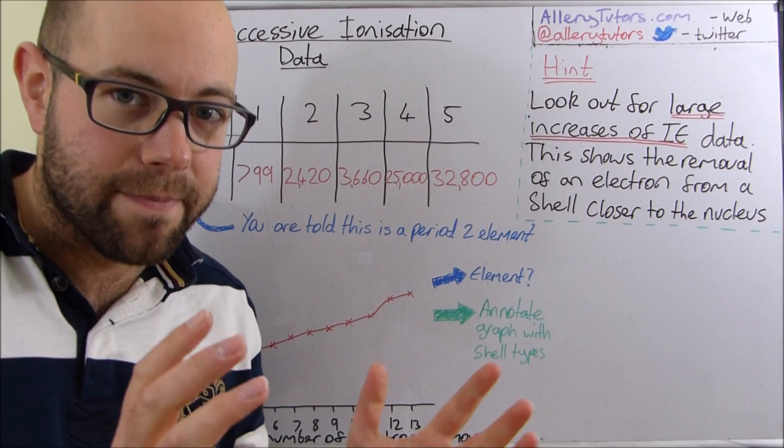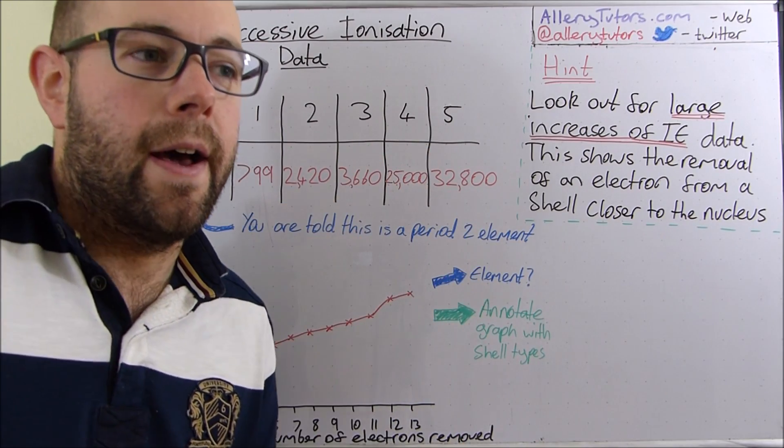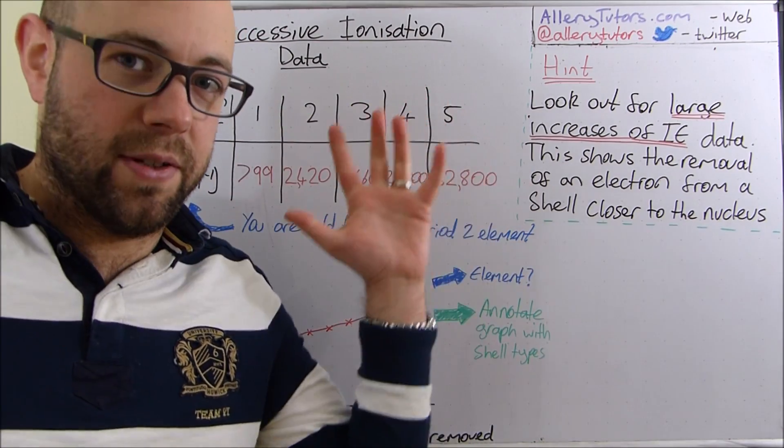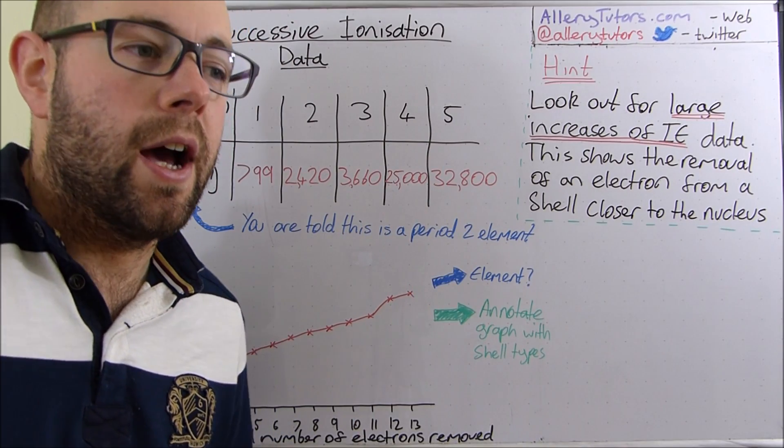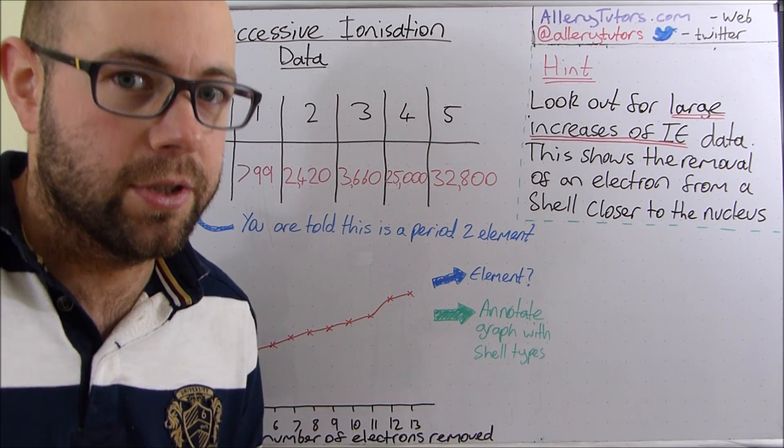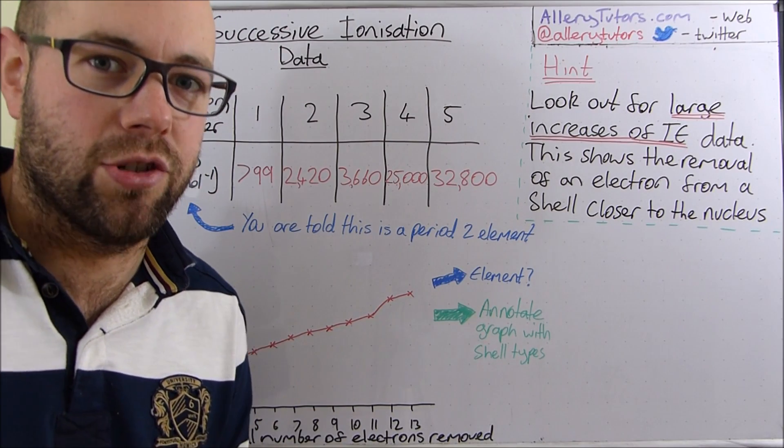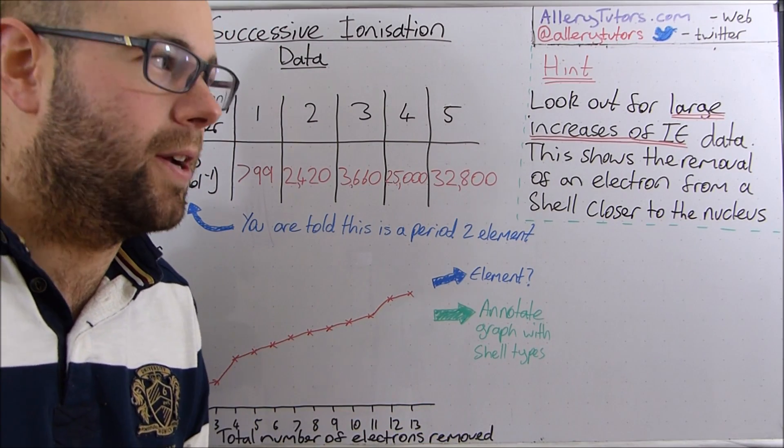If you imagine you've got an atom, you've got the nucleus in the middle and then you've got your shells which develop around the nucleus and those shells are split up into subshells or orbitals but in this case you're just really looking at the shell. We're looking at a very general term.